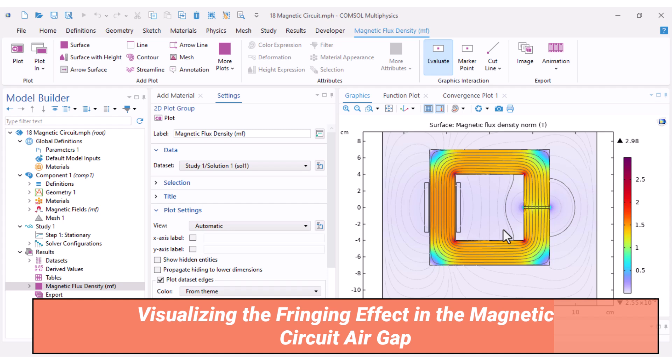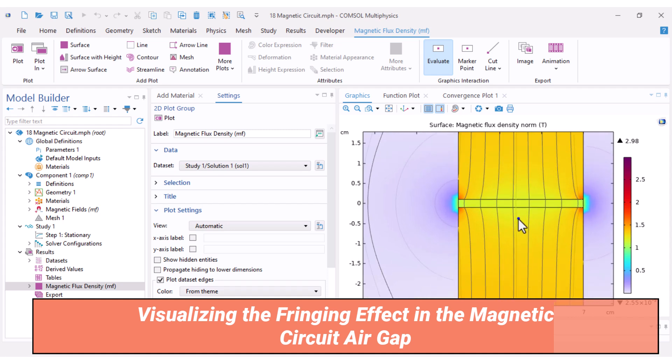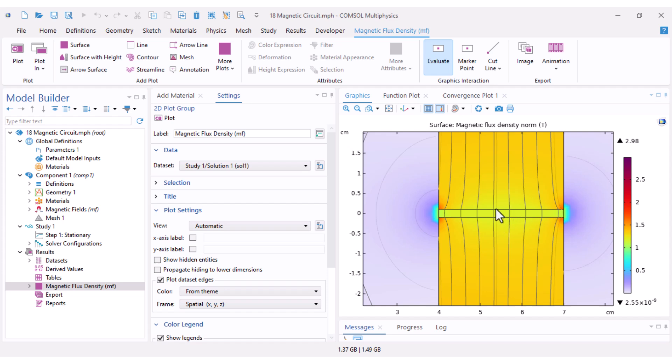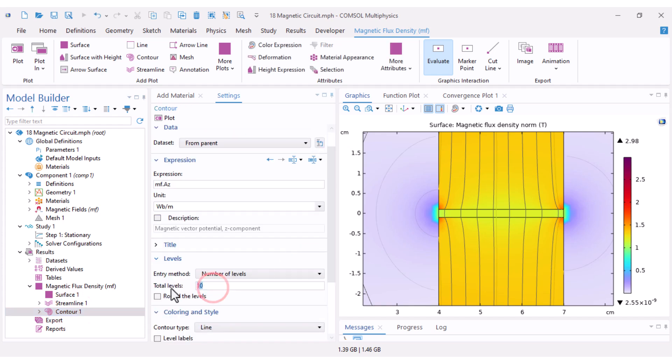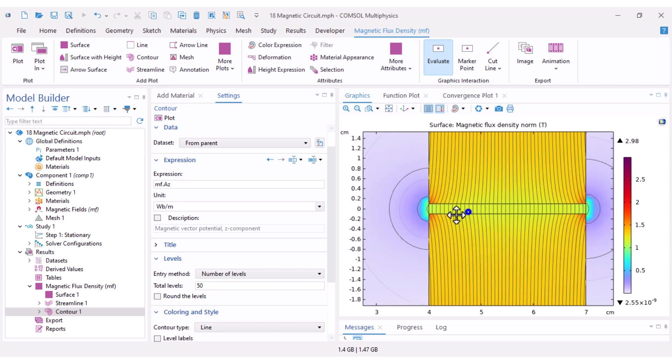Here I mainly want to show the fringing effect around the air gap. You can already see that some flux lines bulge outward from the air gap. To visualize it better, here under the contour I change the total levels to 50 and click plot.